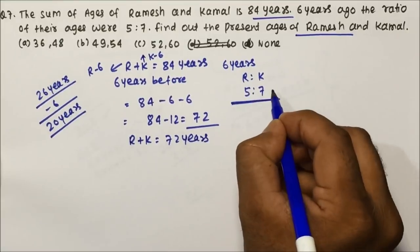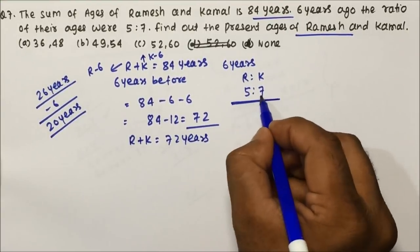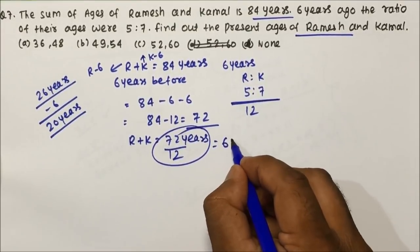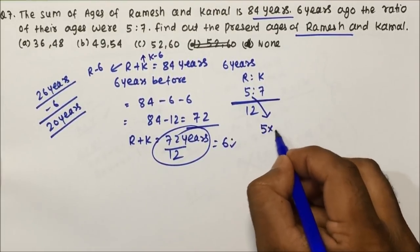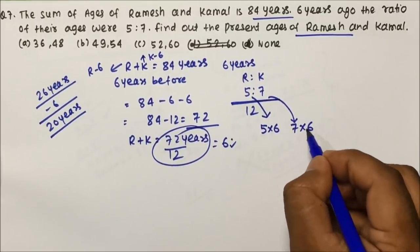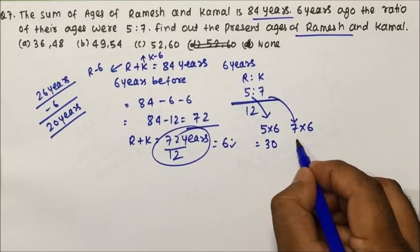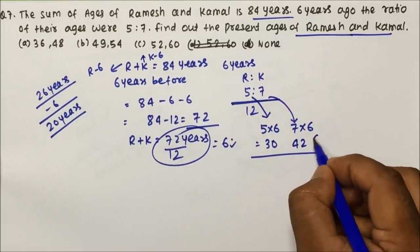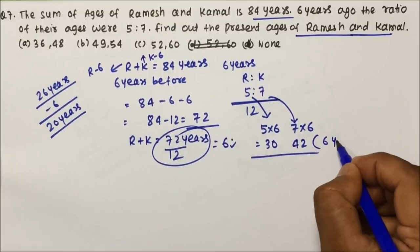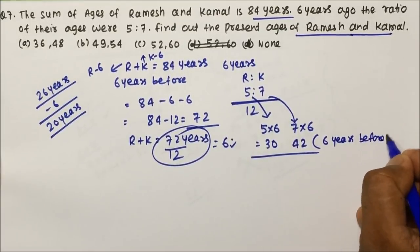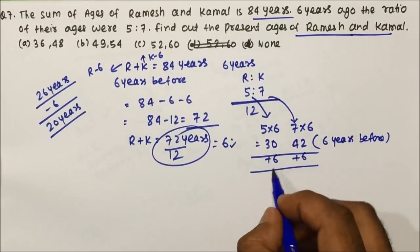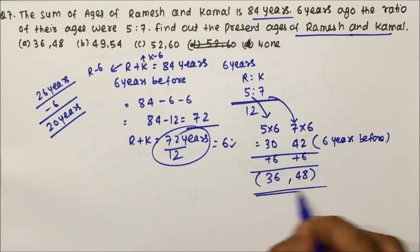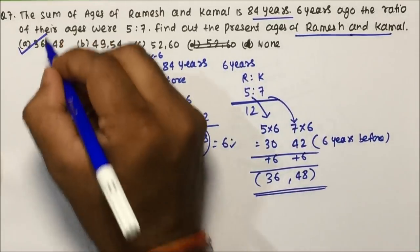The sum of ages of Ramesh and Kamal 6 years before was 72 years. The ratio 6 years ago was 5 is to 7, so 5 plus 7 equals 12. Divide 72 by 12 to get 6. Ramesh's age 6 years before was 5 into 6 equals 30 and Kamal's age was 7 into 6 equals 42. But what is asked is the present age, so add 6 to each: Ramesh is 36 and Kamal is 48 years old.